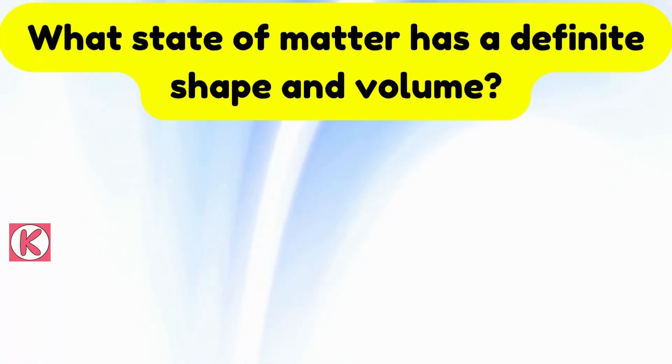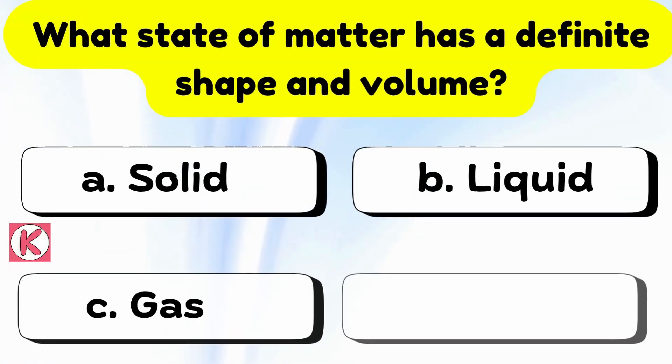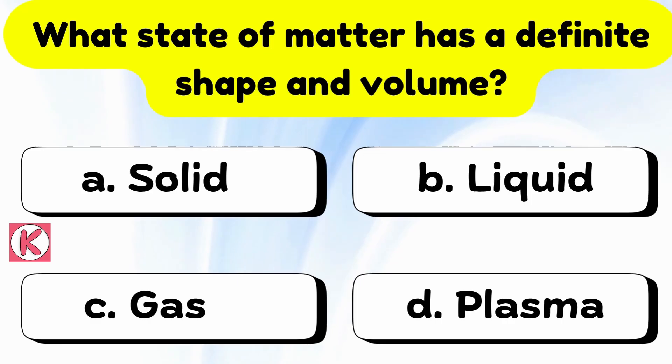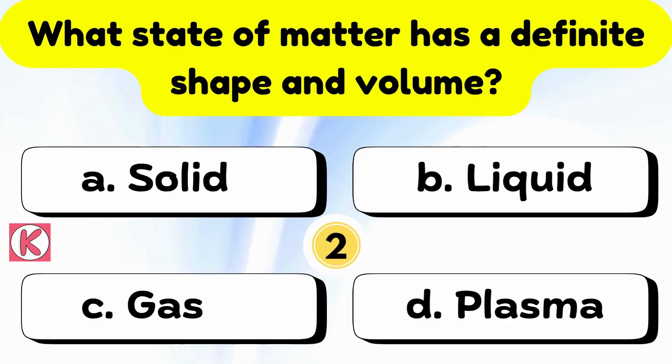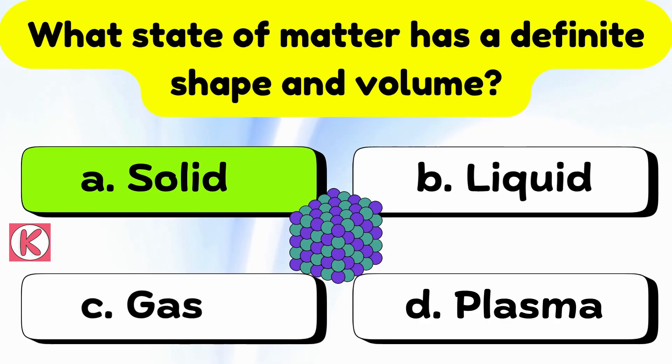Here is the first question. What state of matter has a definite shape and volume? Correct answer, Option A, Solid.